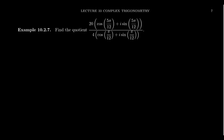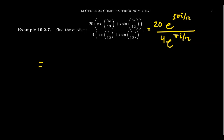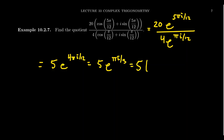Let's find the quotient of 20(cos(5π/12) + i sin(5π/12)) divided by 4(cos(π/12) + i sin(π/12)). In polar form this is 20·e^(5πi/12) divided by 4·e^(πi/12). Dividing the moduli gives 20/4 = 5, and subtracting the exponents gives 5π/12 − π/12 = 4πi/12, which simplifies to e^(πi/3). So the result is 5(cos(π/3) + i sin(π/3)).